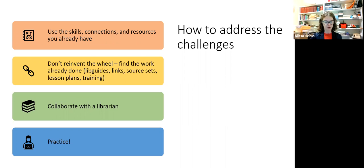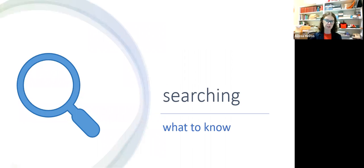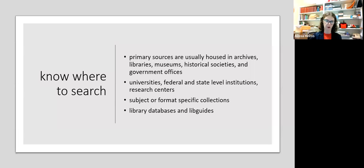So if you're going to be searching for primary sources online to use in your courses, there are lots of things you should know. One, know where to search. Primary sources, especially in the humanities, are usually housed in archives, libraries, museums, historical societies, different government offices, universities, federal and state level institutions have these things.